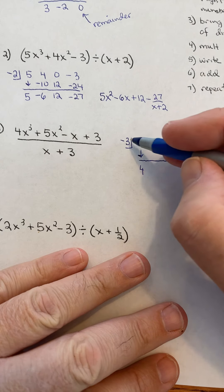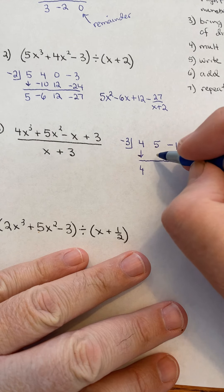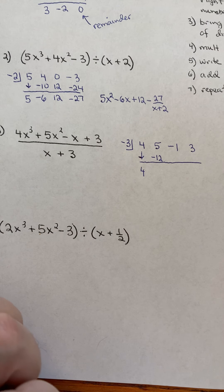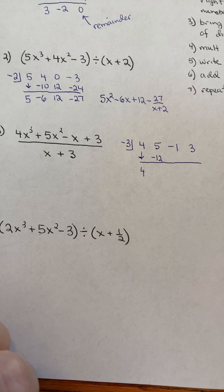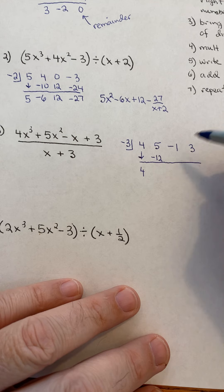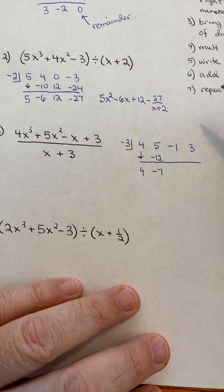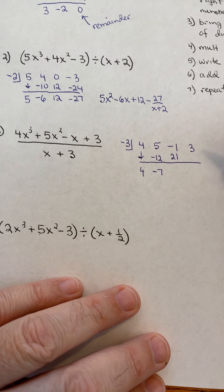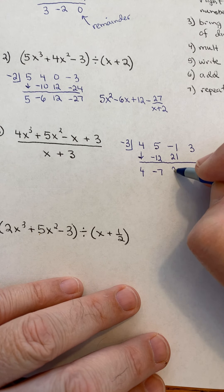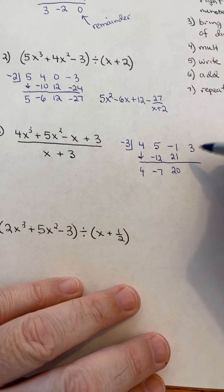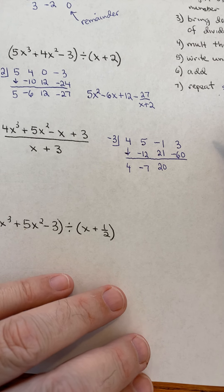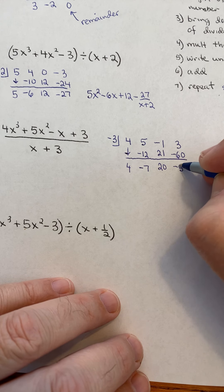Multiply the number from step 1. Negative 3 times 4 is negative 12. I like to go really slow on these because I make fewer mistakes. I'm going to make mistakes. So, just slow down. 5 plus negative 12 is a negative 7. Negative 7 times the negative 3 is positive 21. Add those two up. You get a positive 20 times the negative 3 is a negative 60. Add those up. You get a negative 57.